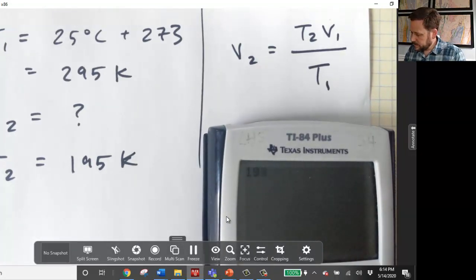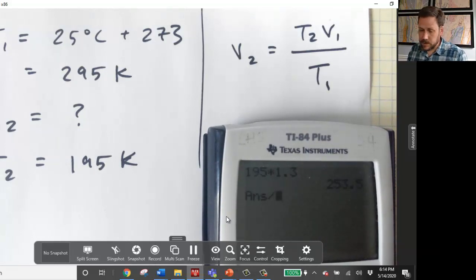T2V1 is 195 multiplied by our initial volume, 1.3. We're going to divide that by the initial temperature, which is 295. And we get 0.859.